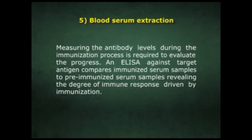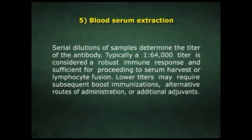Measuring antibody levels during the immunization process is required to evaluate progress. An ELISA against the target antigen compares the immunized serum samples to the pre-immunized serum sample, revealing the degree of immune response. Serial dilutions of samples determine the titer of the antibody. Typically, a 1:64,000 titer is considered a robust immune response and sufficient for proceeding to serum harvest. Lower titers may require subsequent boost immunizations, alternative routes of administration, or additional adjuvants.